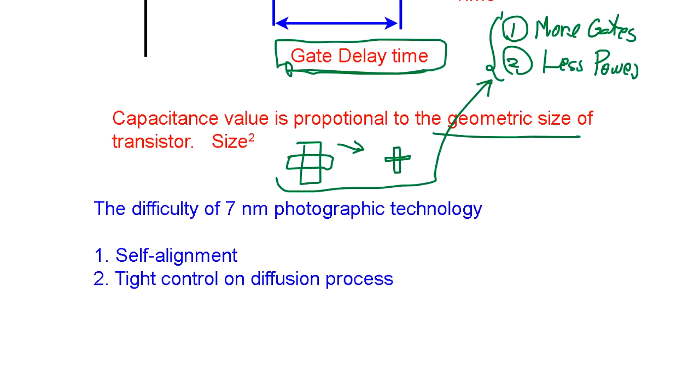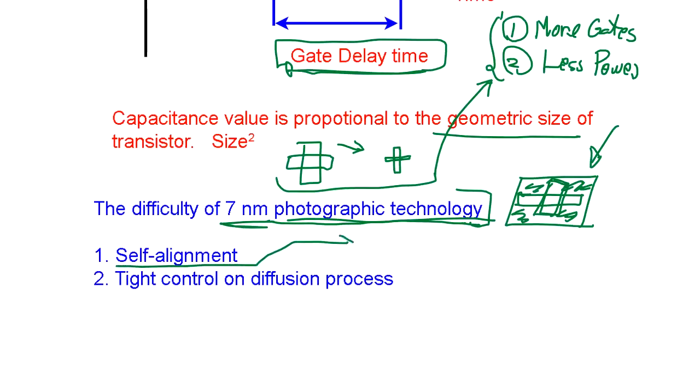Seven nanometer photographic technology: everything is photographic technology in the IC chip because they make this pattern and use light to expose and chemically take out the unnecessary parts. This alignment process is very critical, so photographic technology is the IC chip manufacturing technology. They use various technologies like self-alignment.